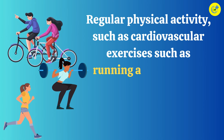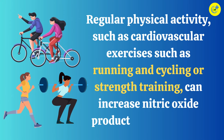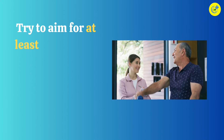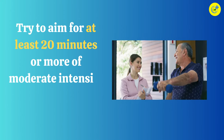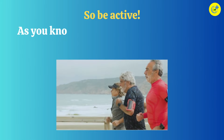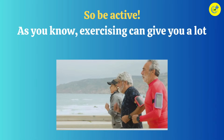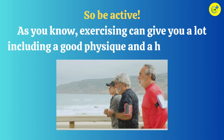Strategy 3 - Regular exercises: regular physical activity, such as cardiovascular exercises like running and cycling or strength training, can increase nitric oxide production in the body. Try to aim for at least 20 minutes or more of moderate-intensity exercise 3-5 days a week, so be active.